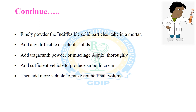Add 2 percent tragacanth powder to the suspension, then measure three-fourths of the vehicle to produce a smooth cream or smooth paste. Examine the suspension carefully and if it contains any foreign particles, filter through a muslin cloth. After filtration, add more vehicle to make up the volume and transfer into the container.